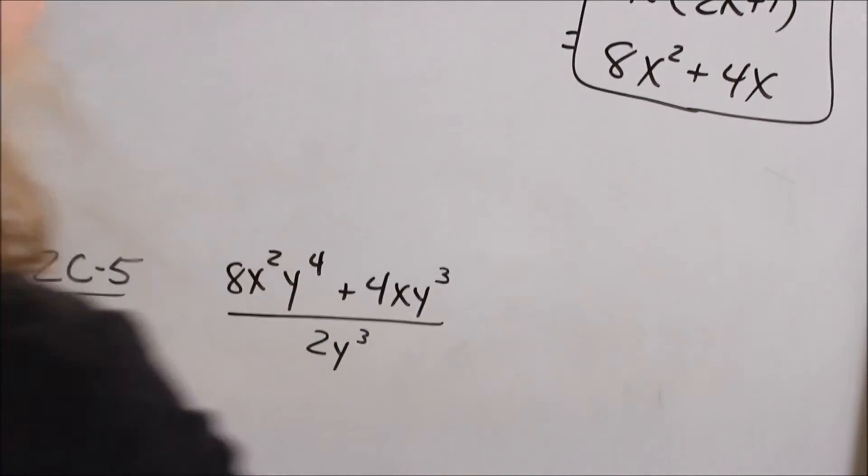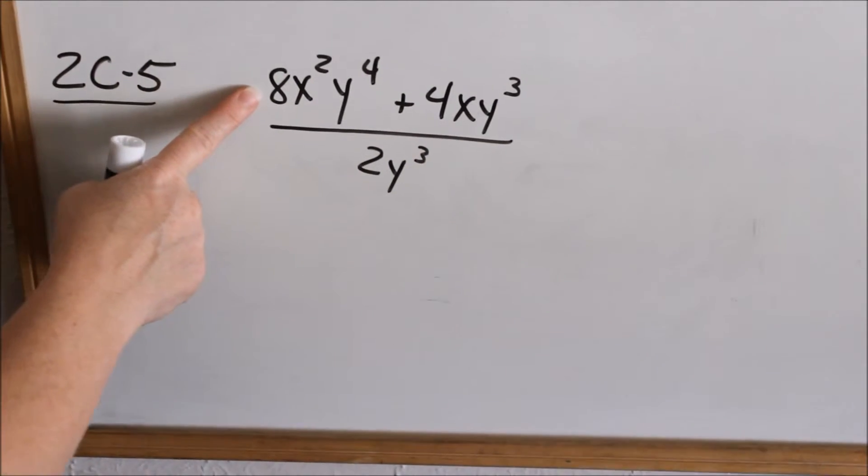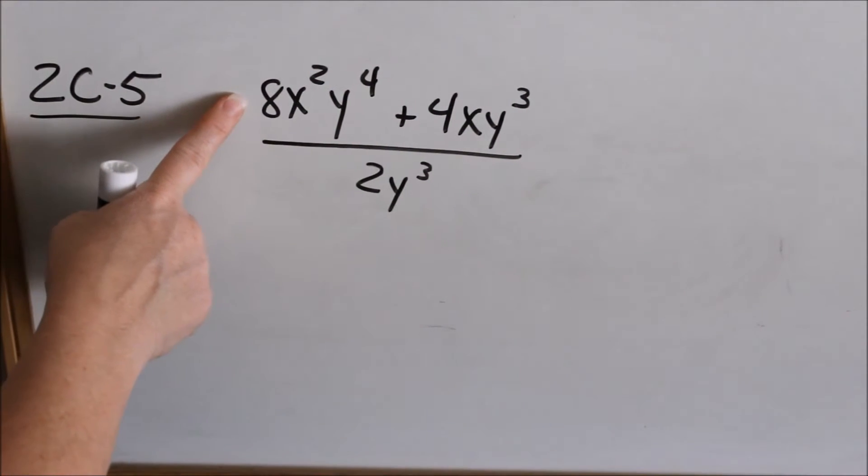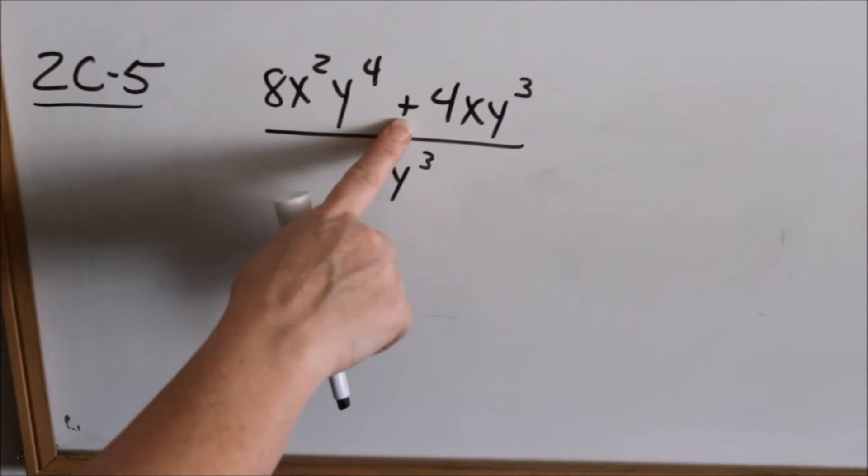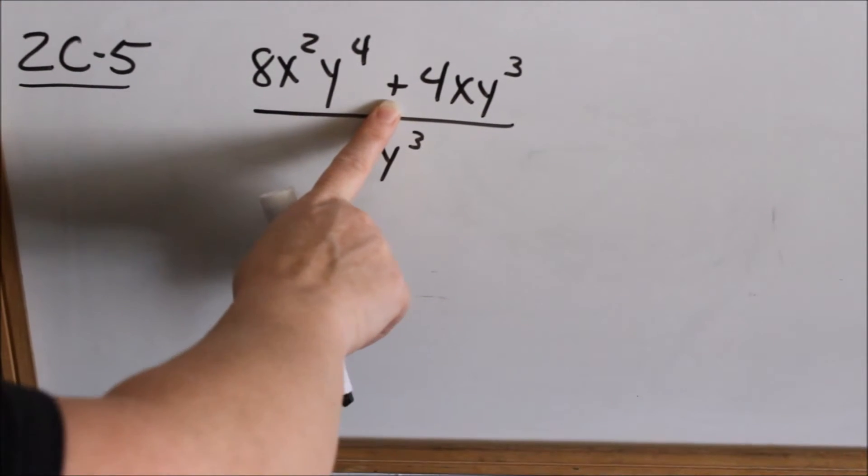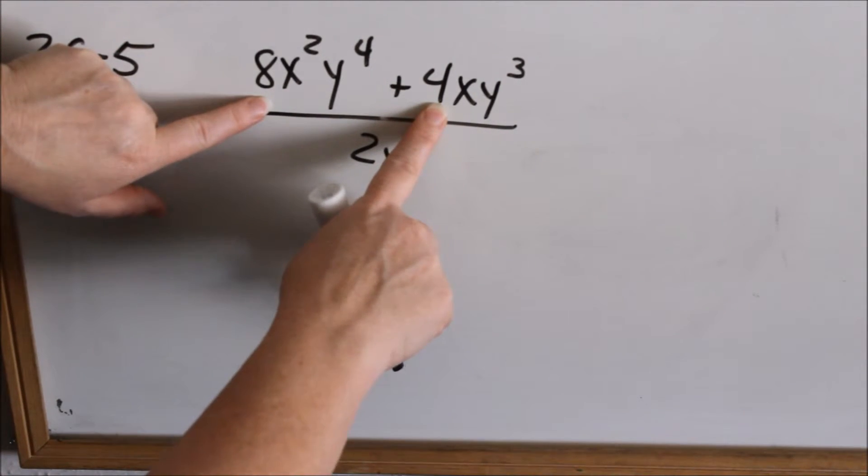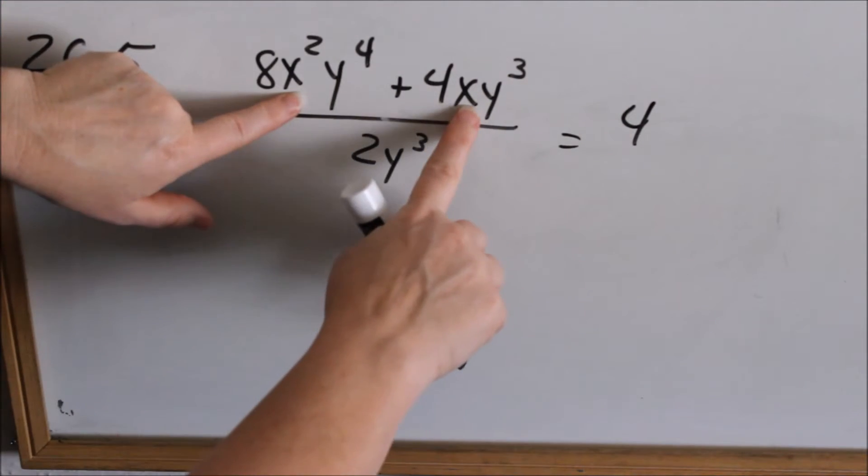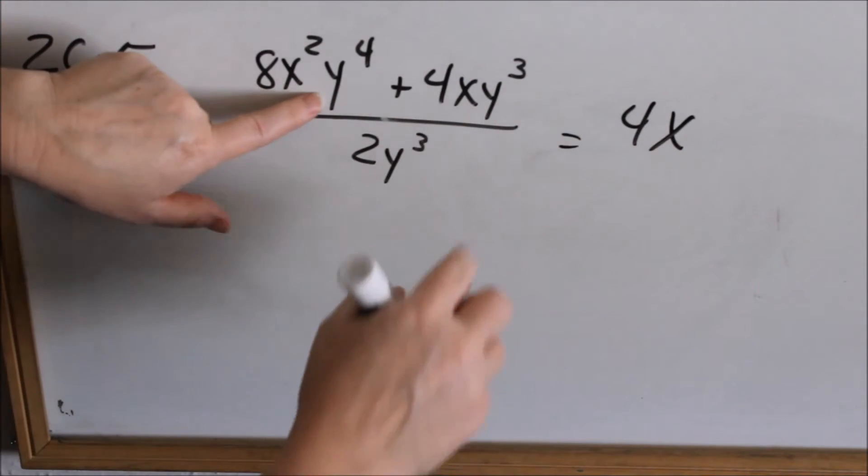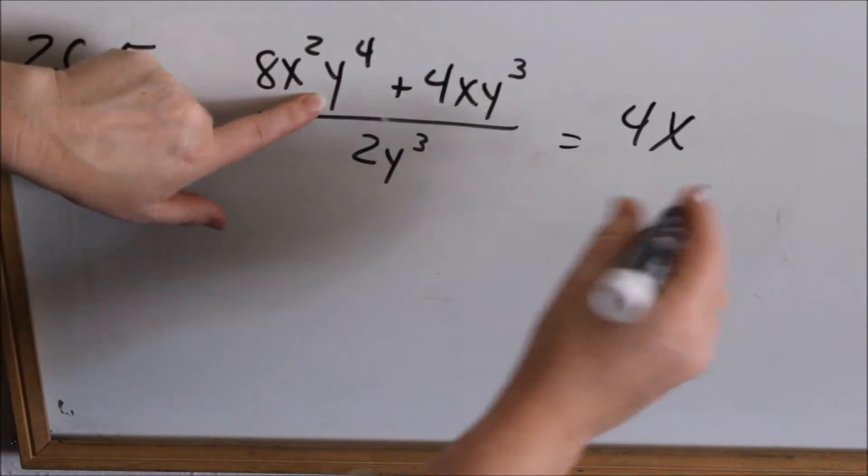Let's go down here to 2C-5. We want to look at the numerator. What can we factor out of these two terms and then see what cancels with the denominator? Don't cancel when you have this addition sign. Factor out, then cancel. Just looking at the numerator, my numbers are 8 and 4. What's the most I can factor out? I can factor out or divide out a 4. Now my x's. The most that I can pull out of both of these is just 1x. Now look at my y's. The most that I can pull out is the lowest exponent, y cubed. I can pull out a y cubed.